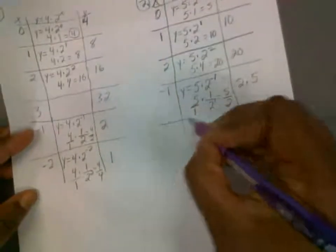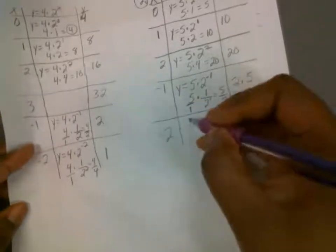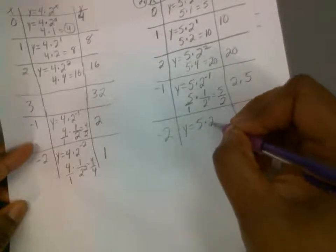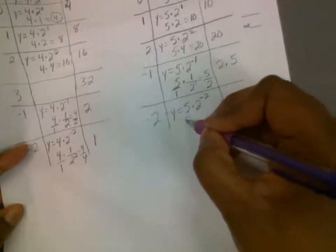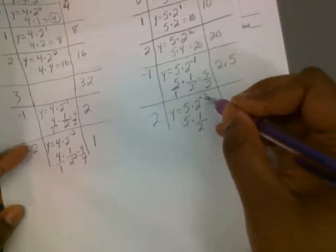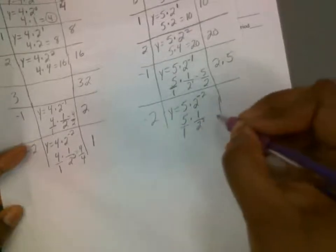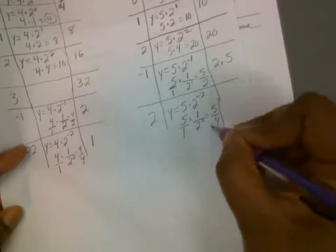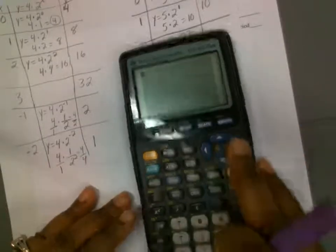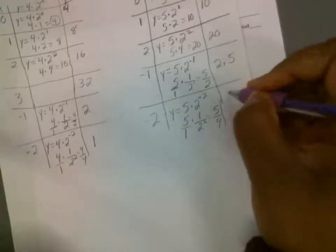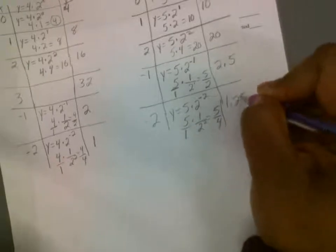Let's go with negative 2. We have y is equal to 5 times 2 to the negative 2. We write this as a fraction — bring the exponent to the bottom to make it positive. So now it's 5 times 1 over 2 to the positive 2. 2 squared is 4, so we get 5 over 4. That's 5 divided by 4, which is 1.25. So that's negative 2 and 1.25.